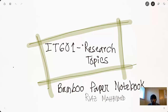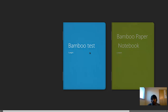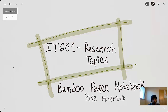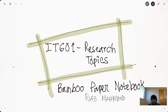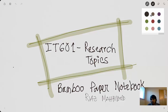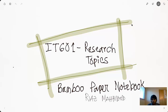Here we can see the first page of my notebook. It's called IT601 research topic, with my name underneath it. There are buttons all over the page: the home button takes you back to choose which notebook you want. You can import from the camera or import an image from files, then there's an undo and redo button. Here are all types of pencils, brushes, and tools with size options, various colors, and an eraser.